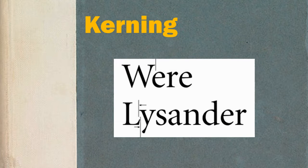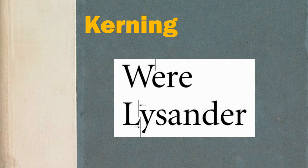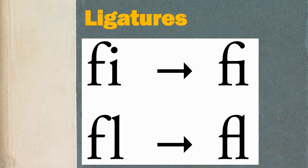Kerning, on the other hand, is the space between two specific letters, and it's based on kerning tables designed by the font designer. This allows, for example, the curve of the letter 'e' to nestle into the space of the vertical capital 'W', or the baseline of the capital letter 'L' to extend into the space of a lowercase letter 'y'.